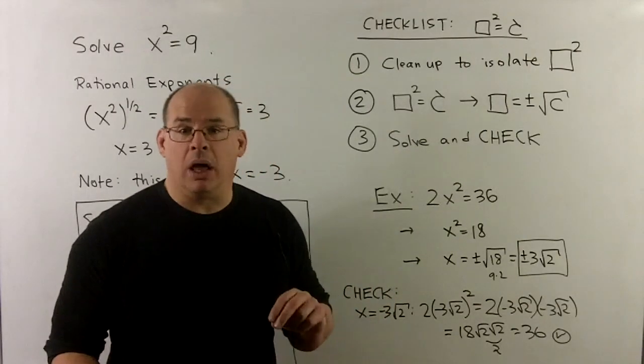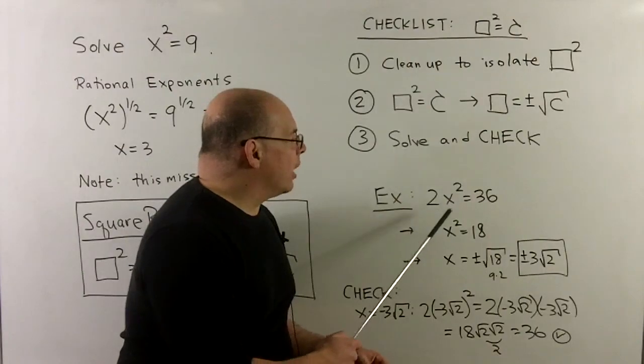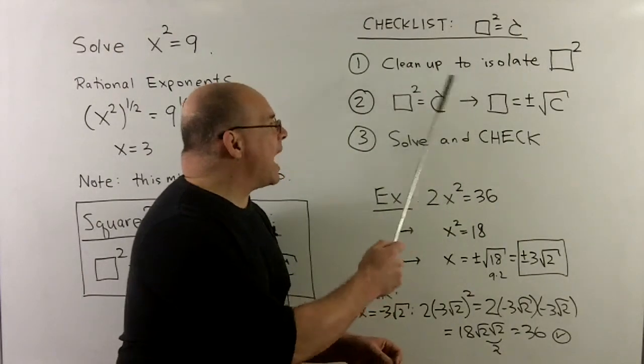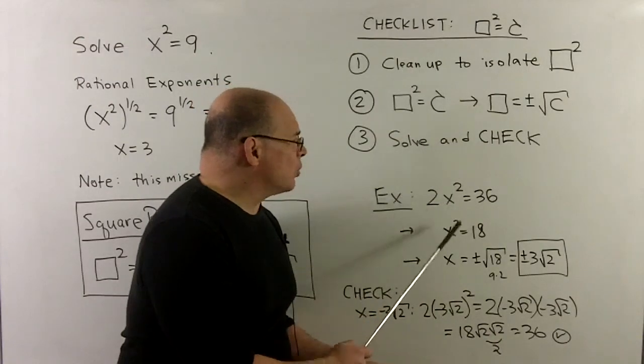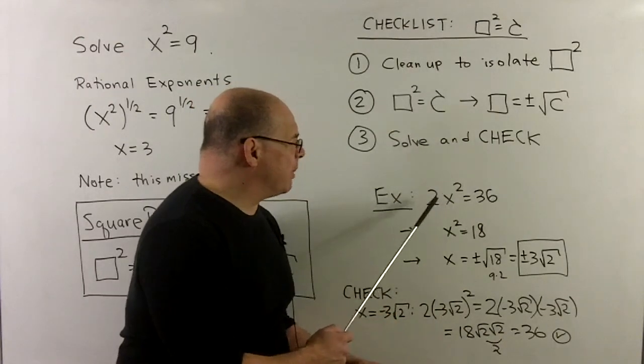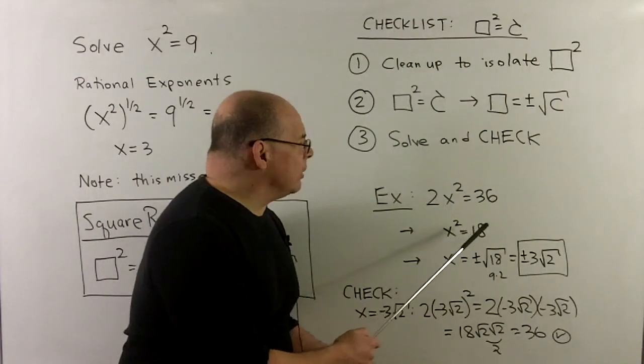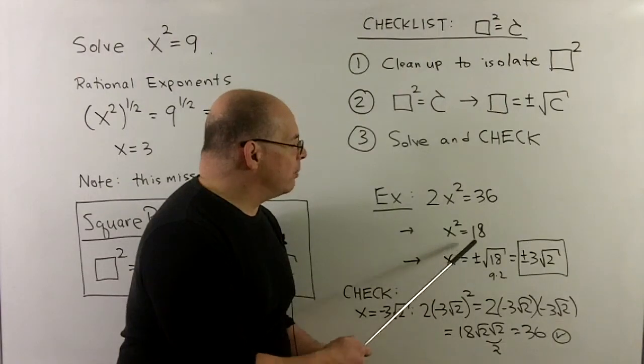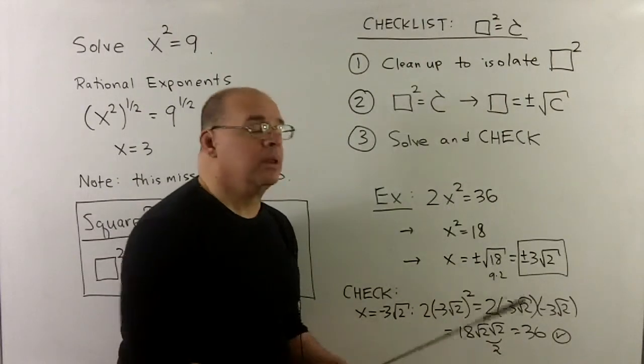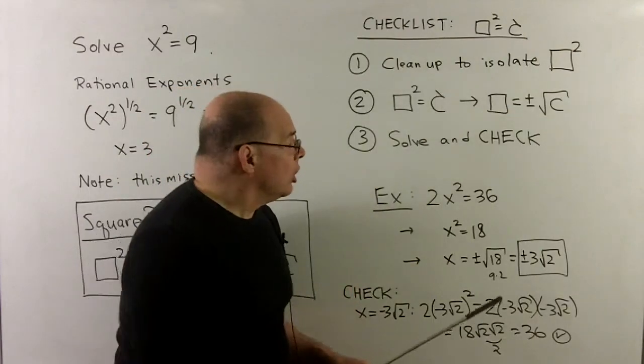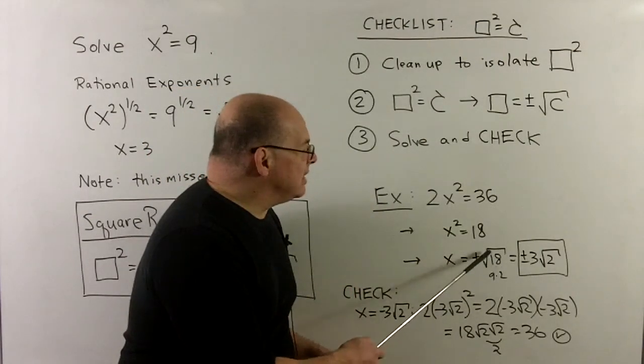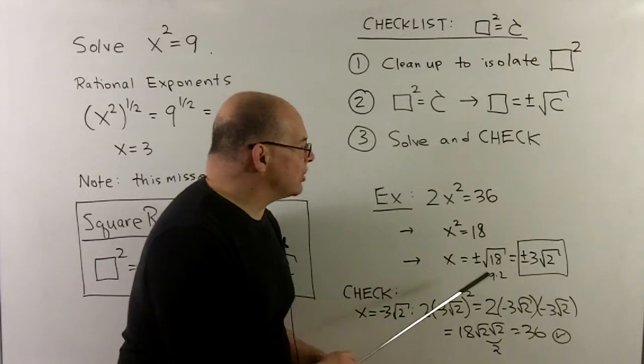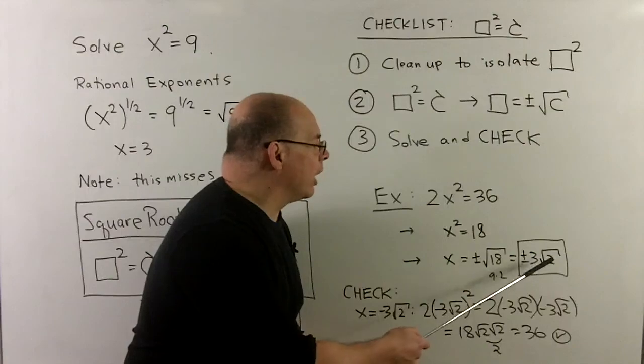We start off slow. So let's consider 2x squared equal to 36. So I want to isolate. Here, box squared is just going to be the x squared. I want to get the x squared by itself. We divide both sides by 2. So we have x squared equal to 18. Square root property says to drop the square, we just go with plus minus square root of 18. And now we know how to clean that up. Note, the biggest square in 18 is a 9. So that's going to go to a 3. And then, our solutions for x are going to be plus minus 3 square root of 2.